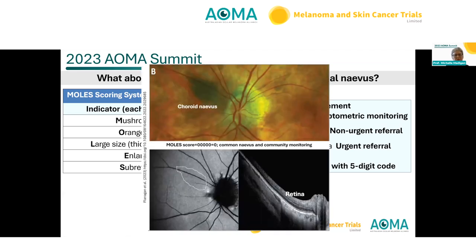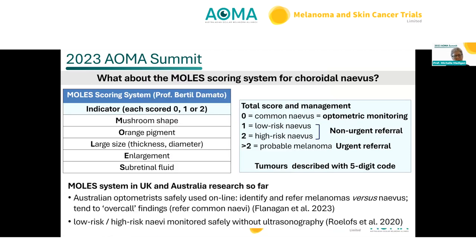Cases are graded with a five-digit score. A choroidal nevus example: flat lesion, no orange pigment seen on autofluorescence, no fluid. This system is being preliminarily studied in Australia and the UK by Damato and colleagues in Melbourne, including Rod O'Day. It has been found it can be used safely in a small online survey with optometrists, and that it is possible to use without ultrasound — great for optometrists.